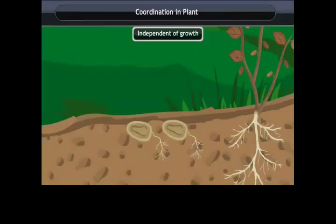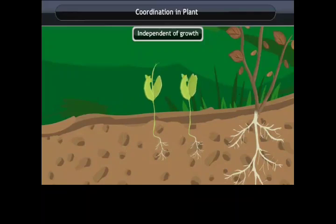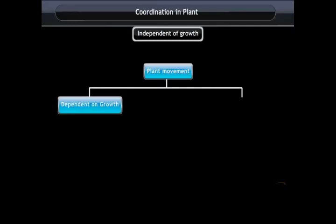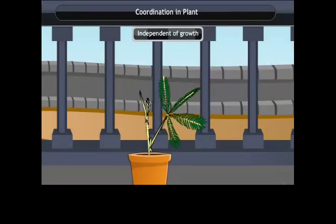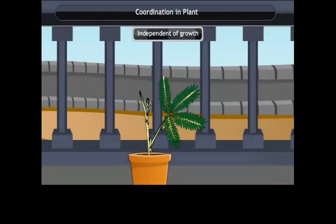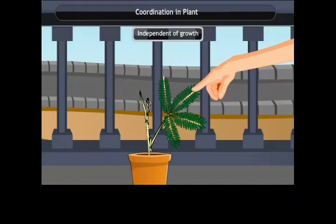Coordination in plants — independent of growth. Plants do not have a nervous system or muscles for controlling and coordinating activities, and show two types of movements: dependent on growth and independent of growth. If we touch the leaves of the touch-me-not plant, they begin to fold up and droop. No growth is involved here; the plant moves its leaves in response to touch using electrical and chemical means to convey information from cell to cell, though there is no specialized tissue for conduction of information.